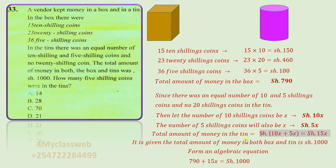Now, we add 790 plus 15x to equal 1000 shillings. That is the total amount of money in both the box and the tin.